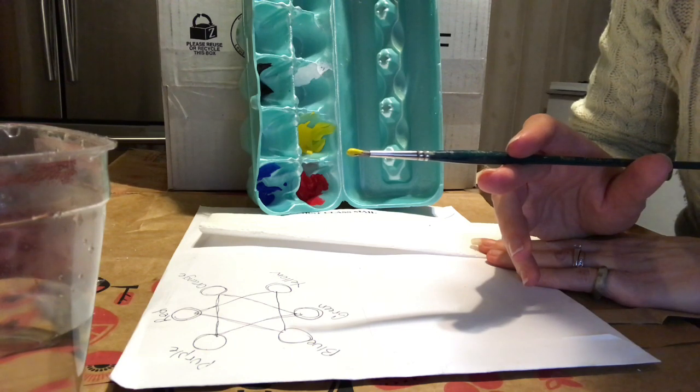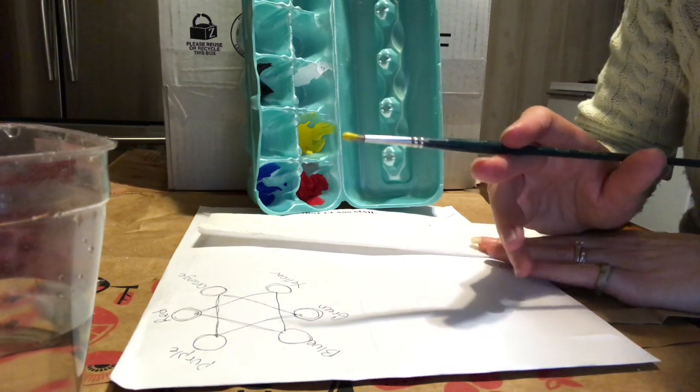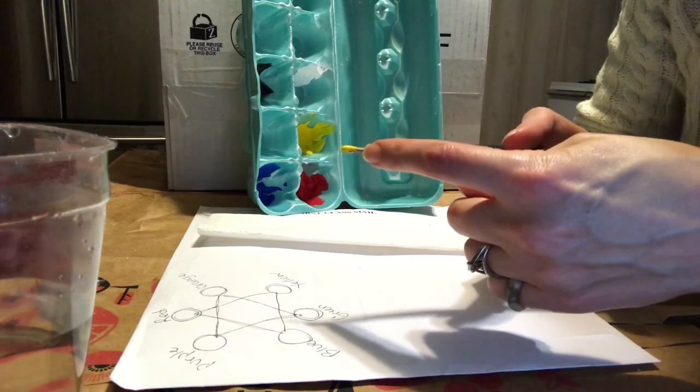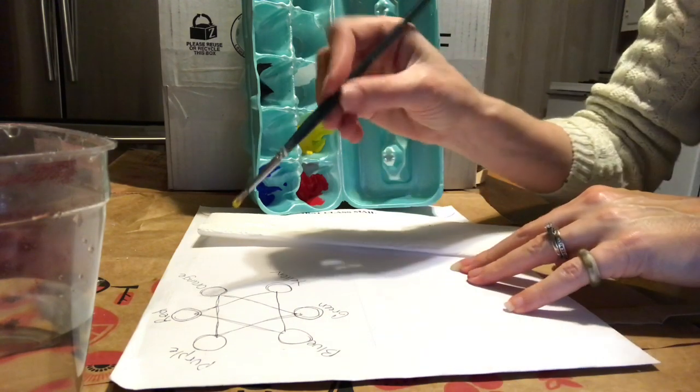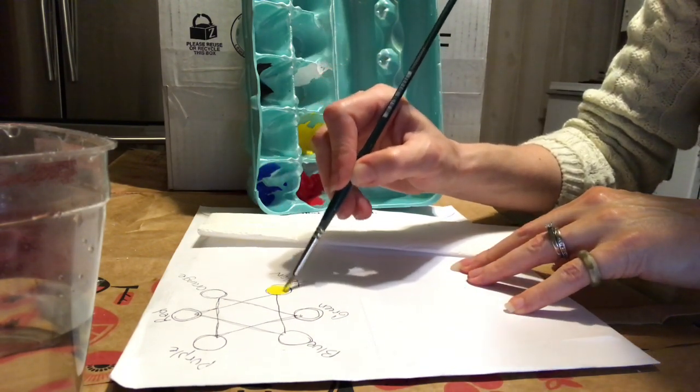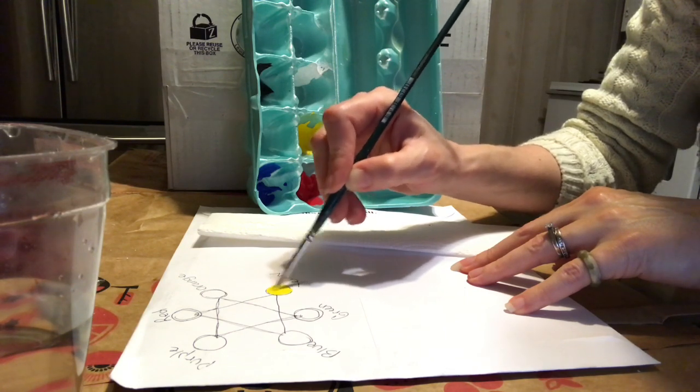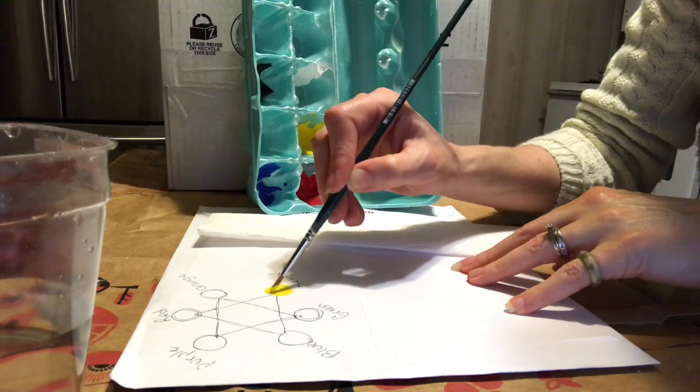You can see it's just on the tip. It's not dripping, it's got enough paint on it to work with. You should never have paint all the way up here. Just the bottom half of the bristles is really all you need. Very lightly, I'm going to paint the yellow. I shouldn't have globs, it should be nice and even.